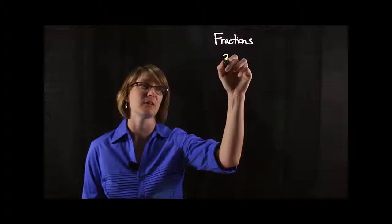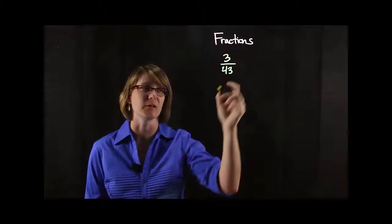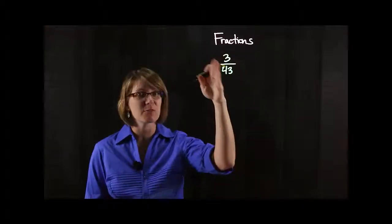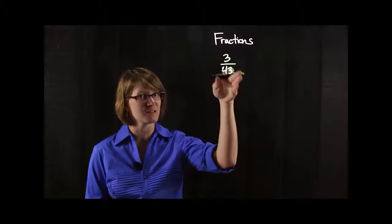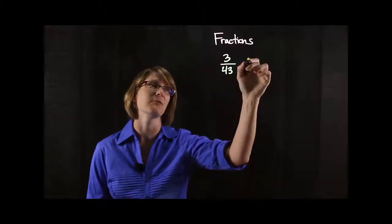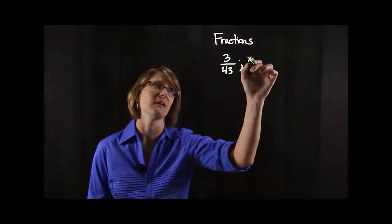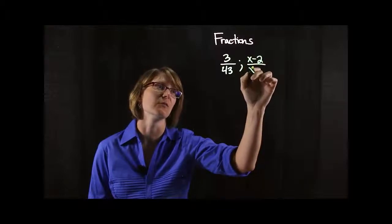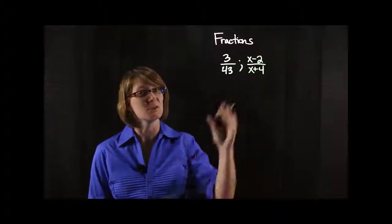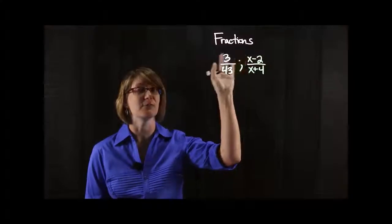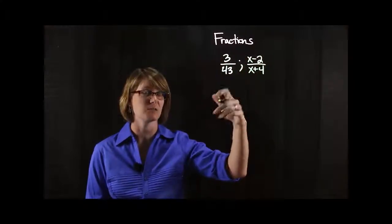All right, so first rule is simplifying fractions. If you have a fraction like let's say 3 over 43, just because they both have a 3 in them doesn't mean you can magically cancel those 3s. Just like for example if we had x minus 2 over x plus 4, because these both have xs in them you can't magically cancel those. You need to be able to factor things and then you can cancel stuff.